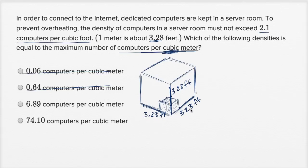And so what's the volume right over here? Well, it's going to be 3.28 times 3.28 times 3.28. So the volume here is 3.28 to the third power, feet cubed. Cubic feet. And this is how many cubic feet you have per cubic meter, because this whole thing is also a cubic meter.